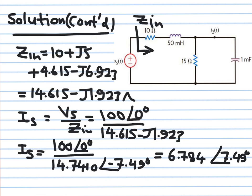Computing Z_in: adding all components together — real parts: 10 + 4.615 = 14.615 Ω; imaginary parts: −6.923 + 5 = −j1.923 Ω. So Z_in = 14.615 − j1.923 Ω.